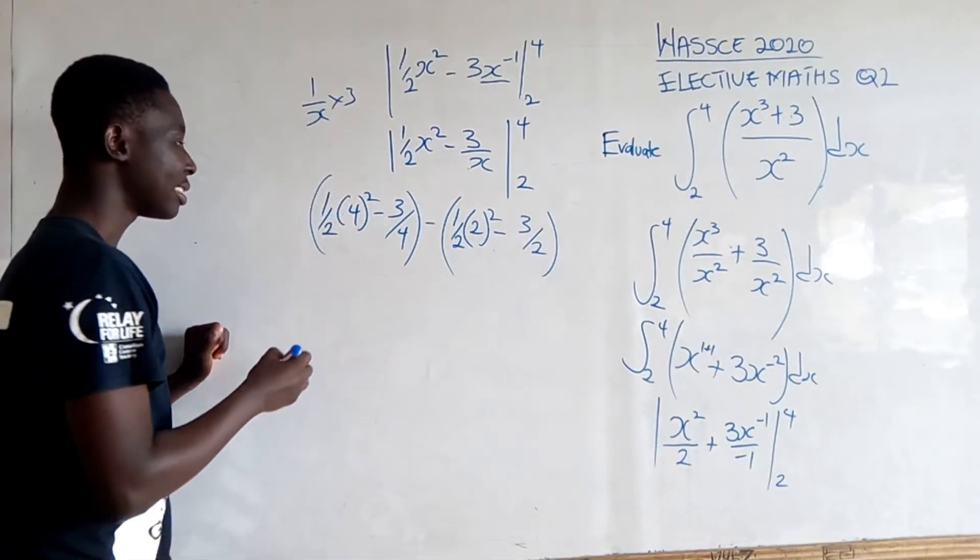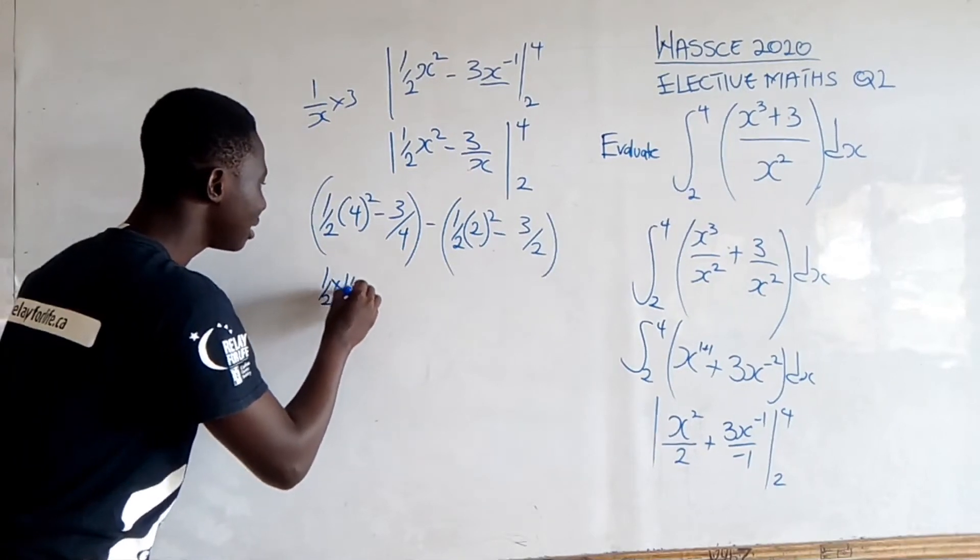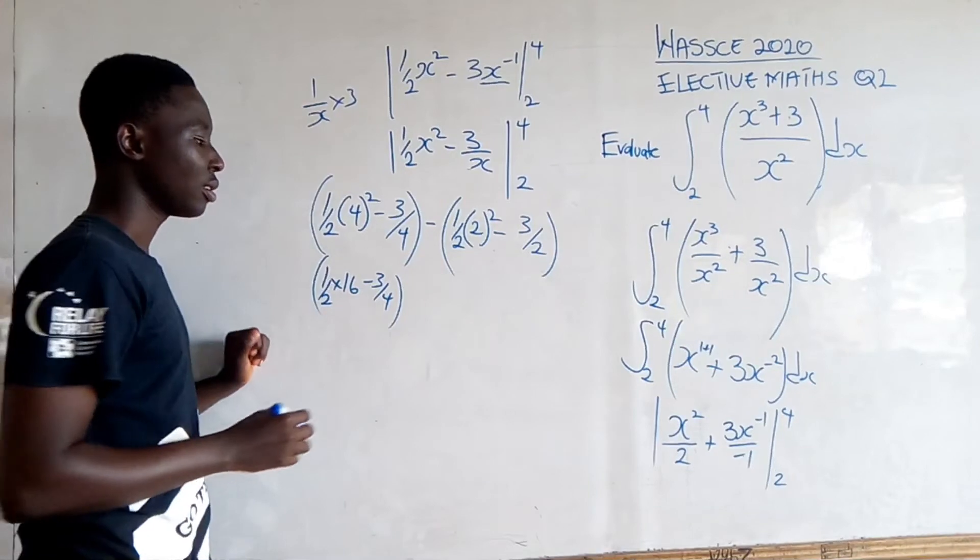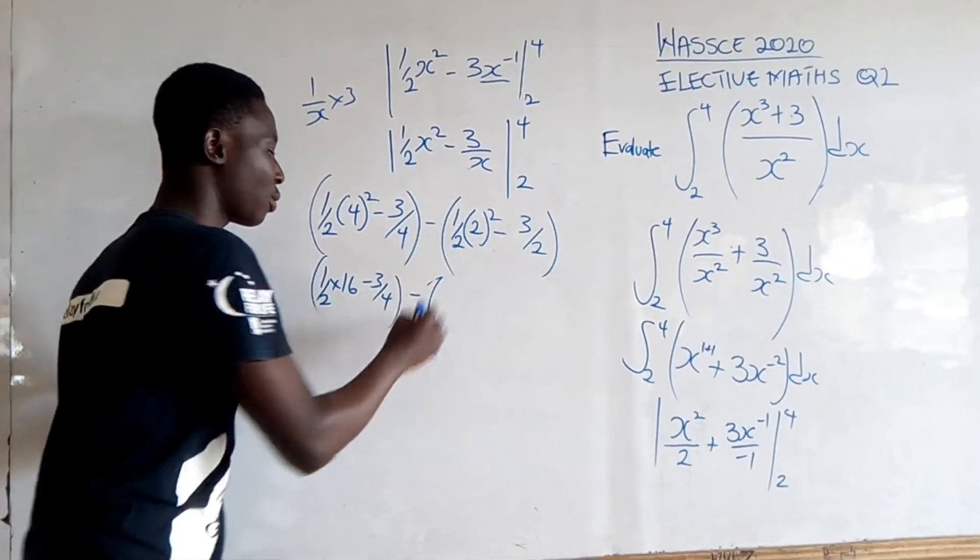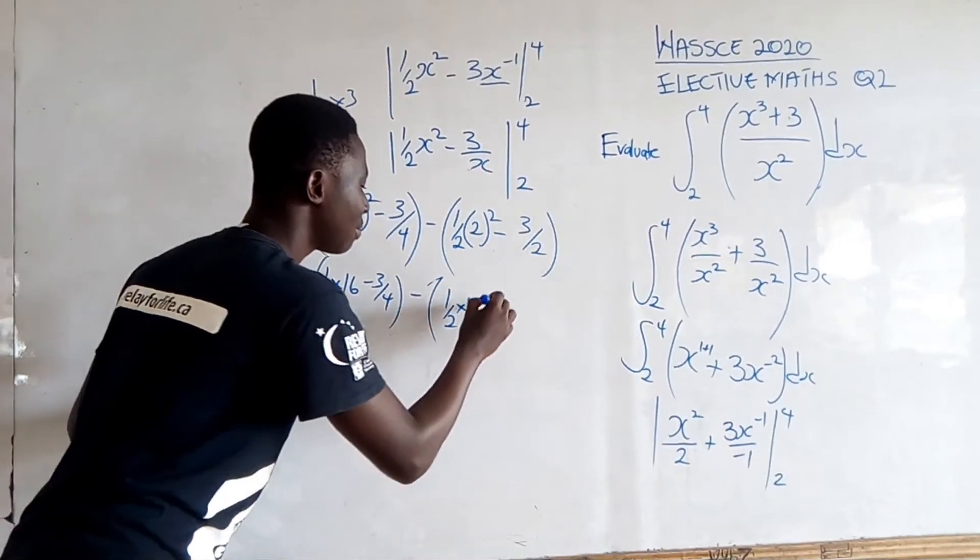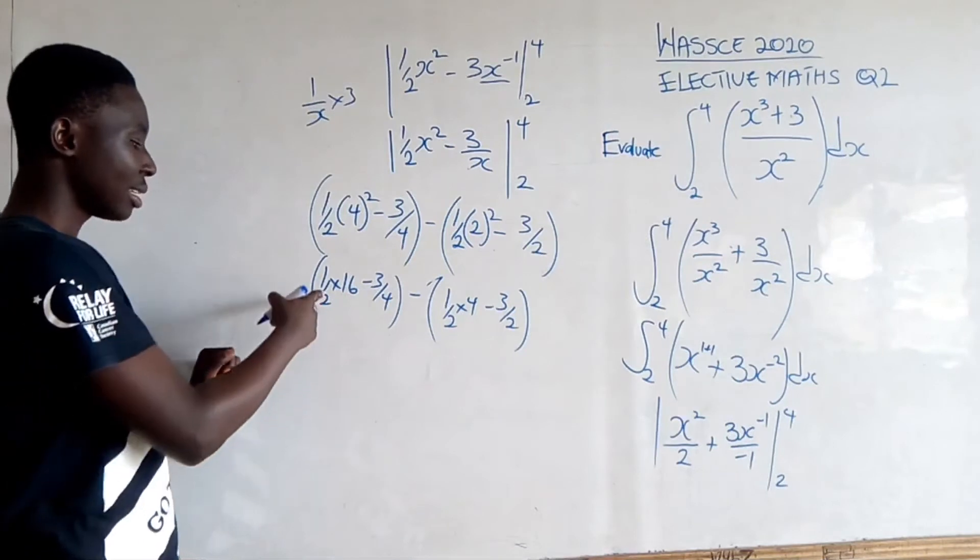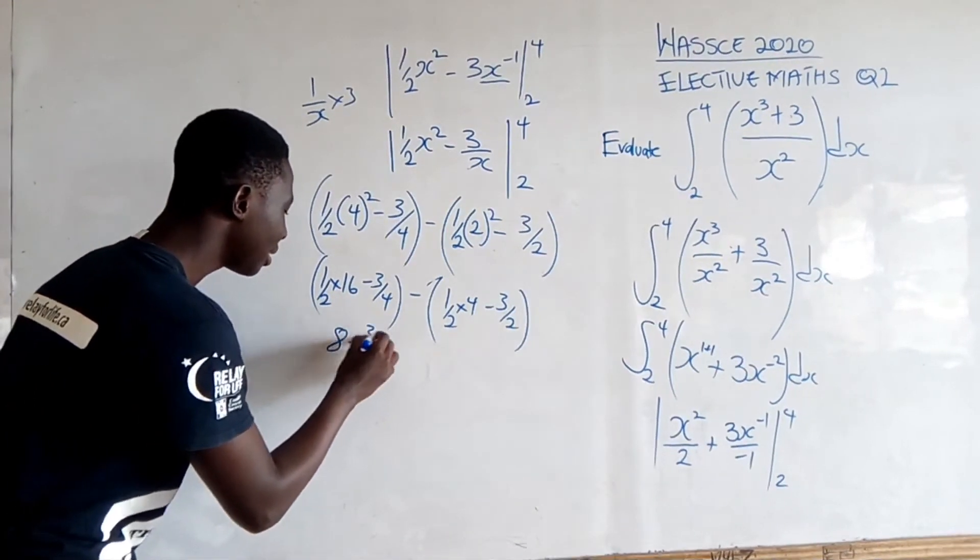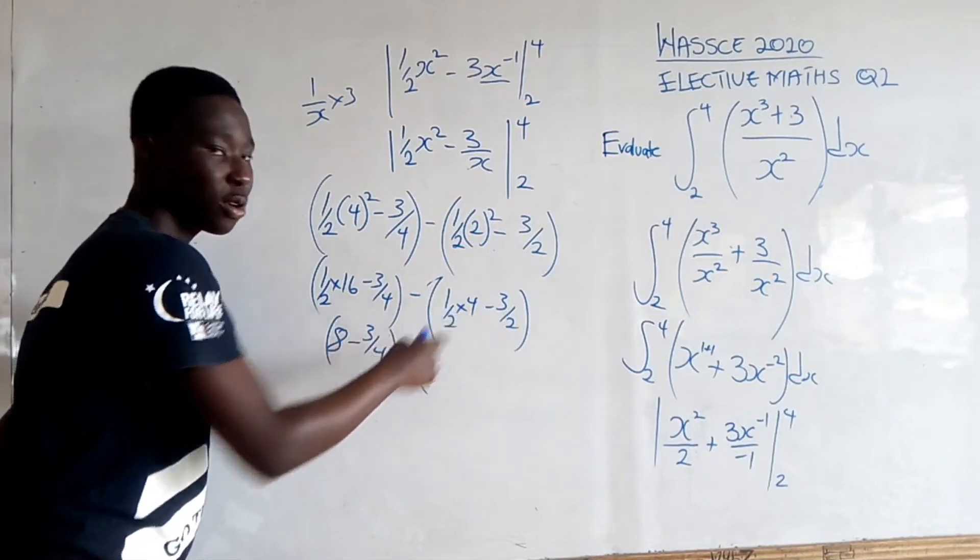Now, 4² is 16, so I get (1/2)(16) minus 3/4, minus [(1/2)(2²) minus 3/2]. Half of 16 is 8, so 8 minus 3/4, and half of 4 is 2, minus [2 minus 3/2].